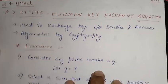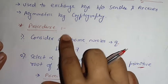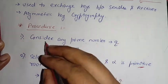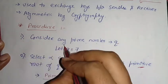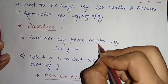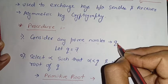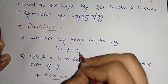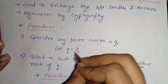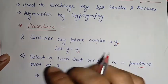There are certain procedures and steps to solve this algorithm. The first step is to consider any prime number. We have taken Q as a variable, so let Q equal 7. You can take any prime number you wish.